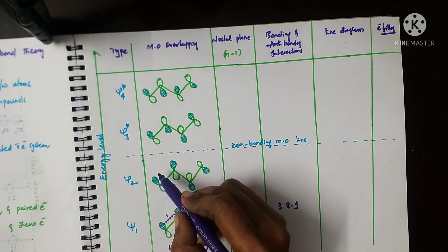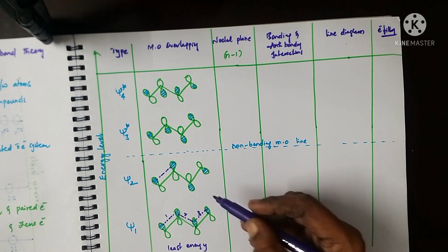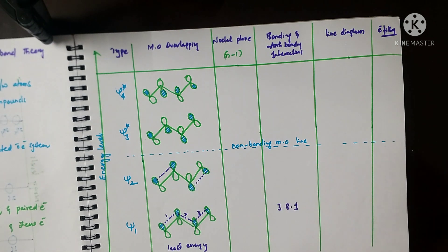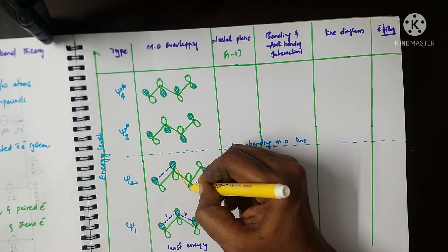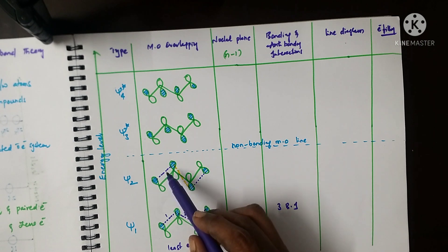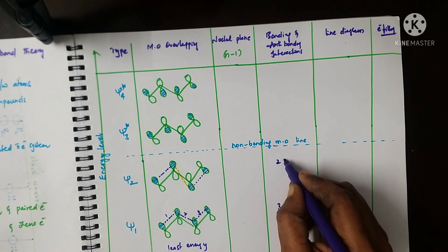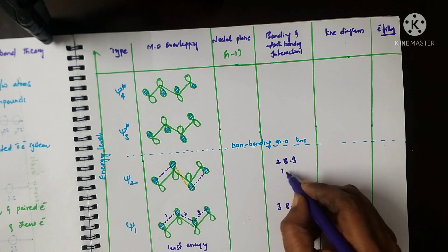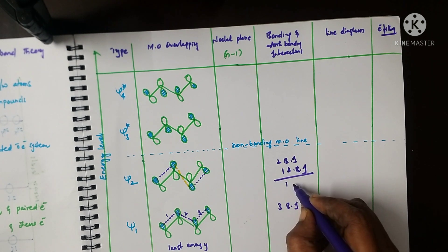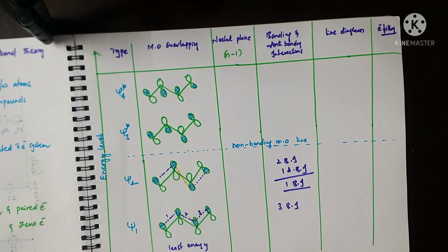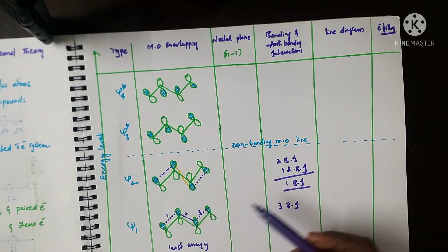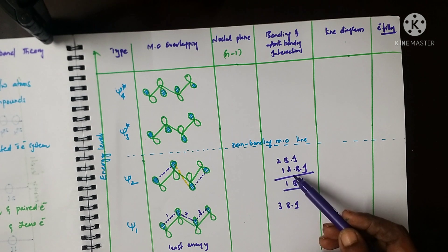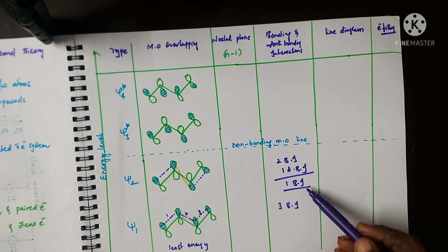In psi 2, same-side lobes give one bonding interaction, but there is also one anti-bonding interaction where opposite-side lobes overlap. So psi 2 has two bonding interactions and one anti-bonding interaction, giving a net of one bonding interaction. Psi 2 is the second bonding molecular orbital.